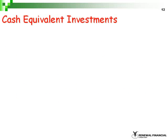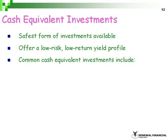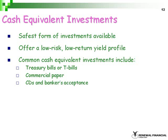Let's look at cash-equivalent investments. Cash, or cash-equivalent securities, are the safest form of investments available. They offer a low-risk, low-return yield profile. Cash equivalents include U.S. Government Treasury bills, or T-bills, commercial paper, certificates of deposit, or CDs, bankers acceptance, and other money market instruments as well.